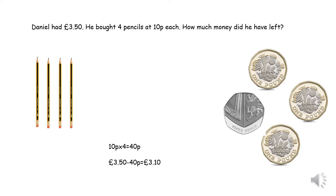Each pencil cost 10 pence and Daniel bought 4 of them. So we need to do 10 pence times 4, which equals 40 pence. To find out how much money he had left we need to do £3.50 take away the 40 pence, which would leave £3.10. So Daniel was left with £3.10.